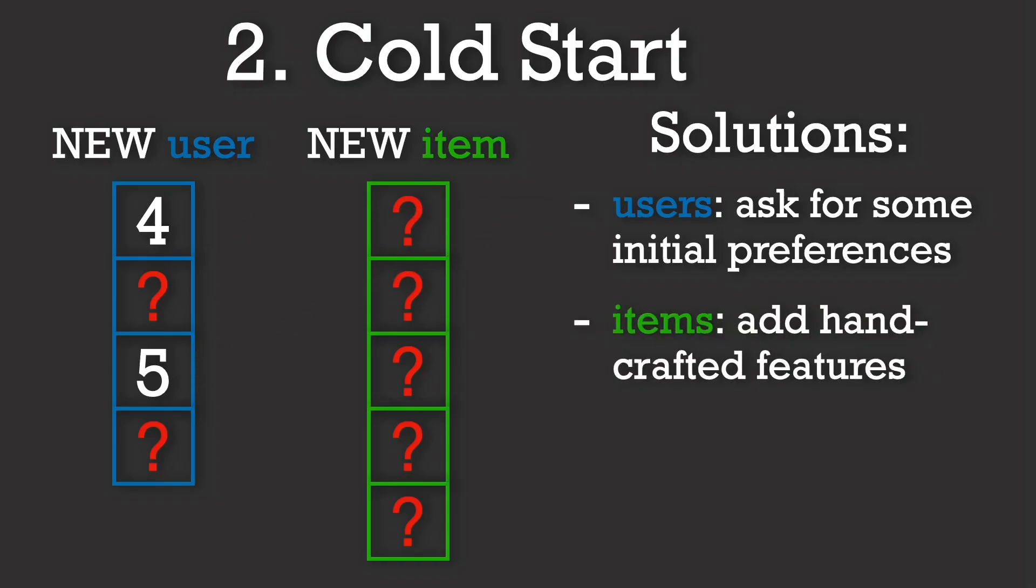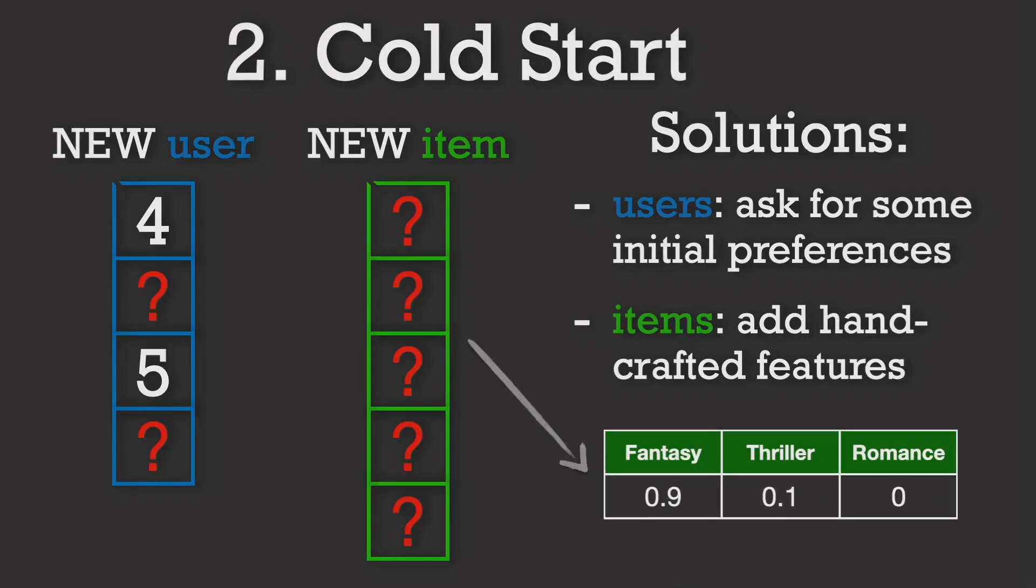For new items, content-based methods can help. Even if a new book has no ratings yet, we can still recommend it based on its features.